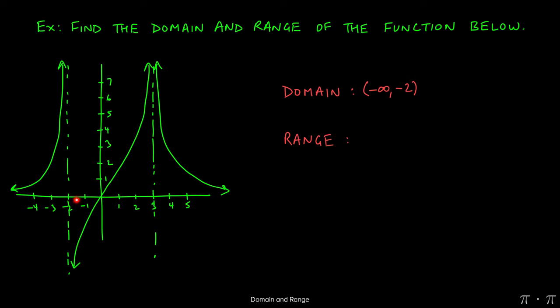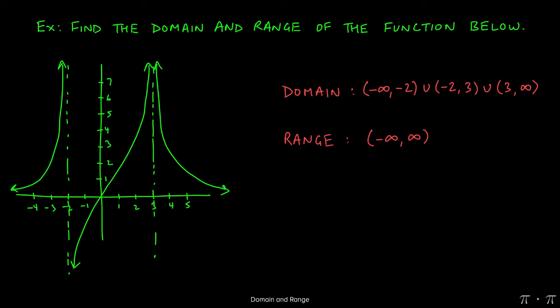We pick up again at negative two and have y values all the way until x equals three, so our next piece is from negative two to three, excluding three. Once past the asymptote at three we have no further issues, so our last piece is from three to infinity. For the range, looking at the middle piece, this portion goes down to negative infinity and up to positive infinity, hitting all y values in between.